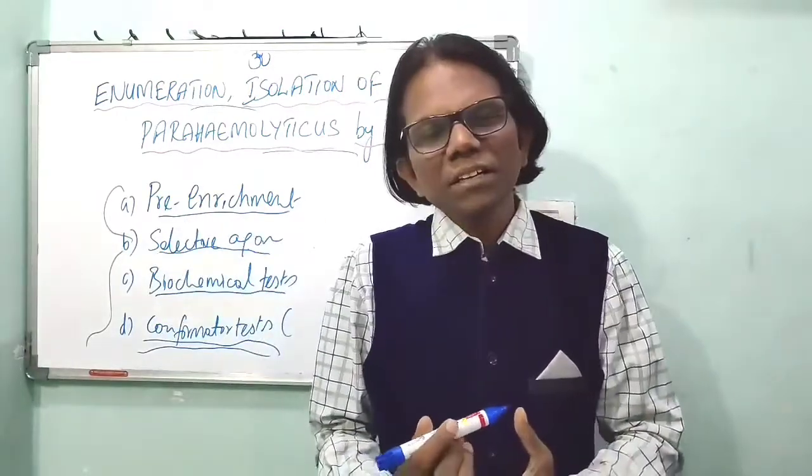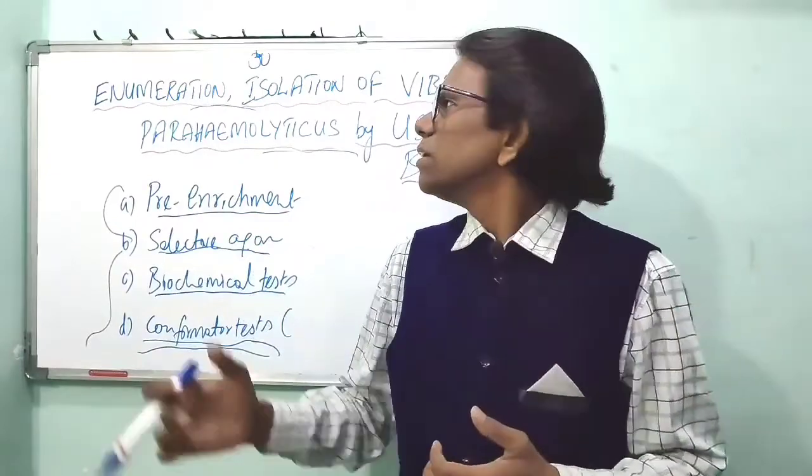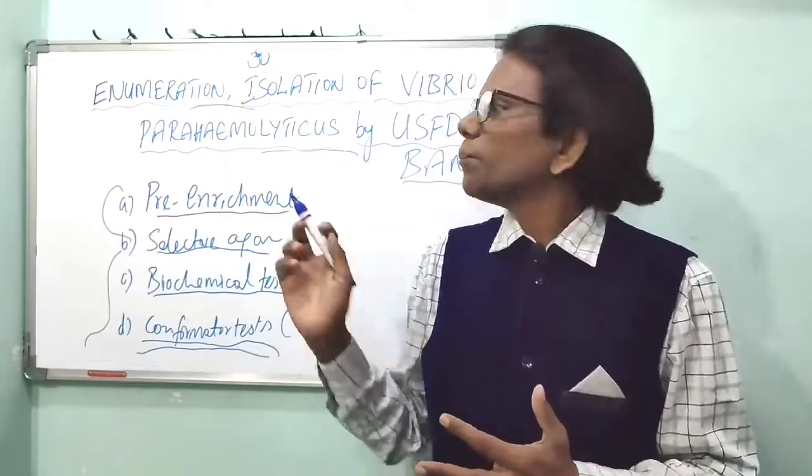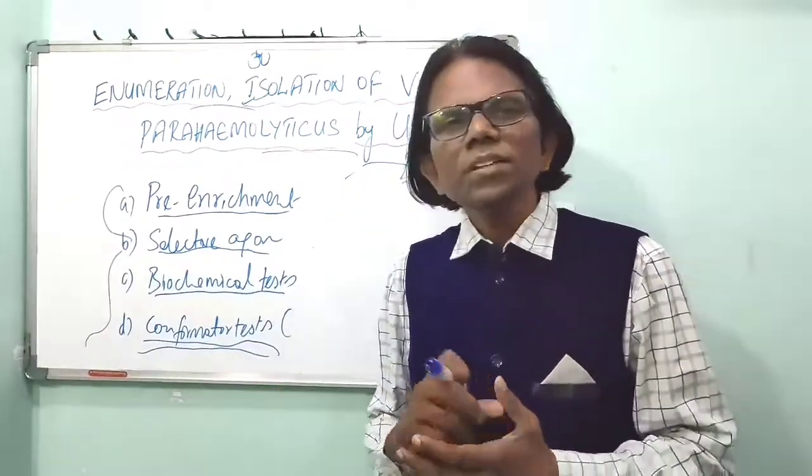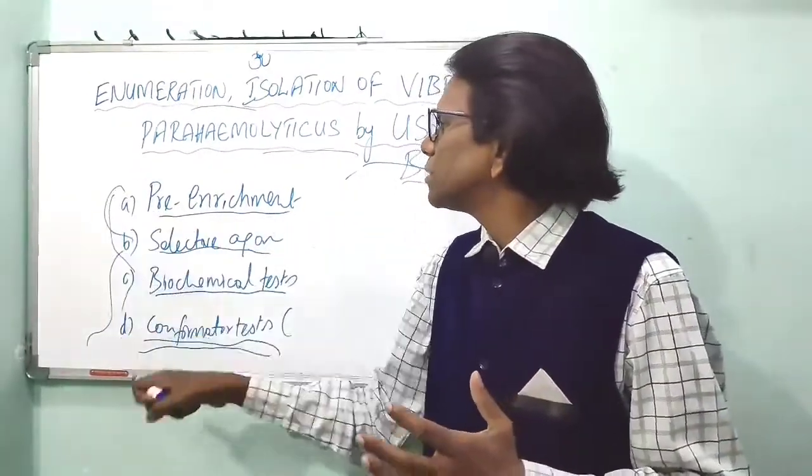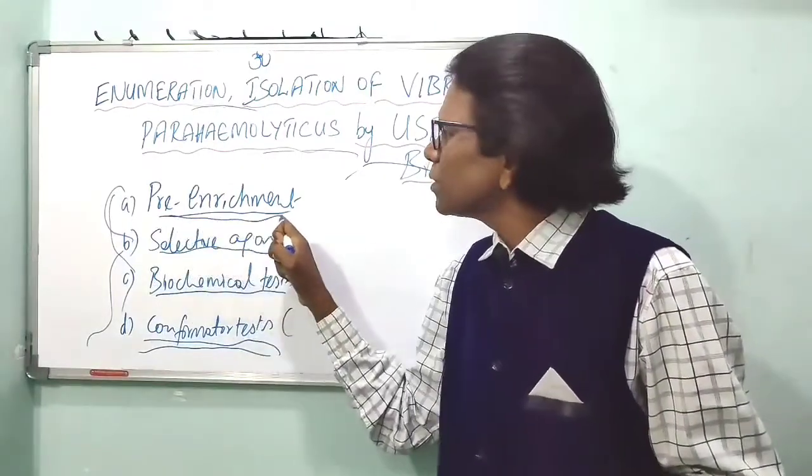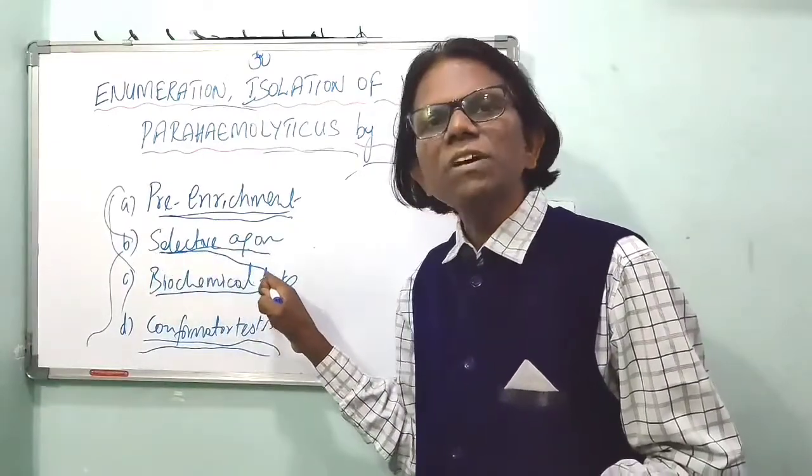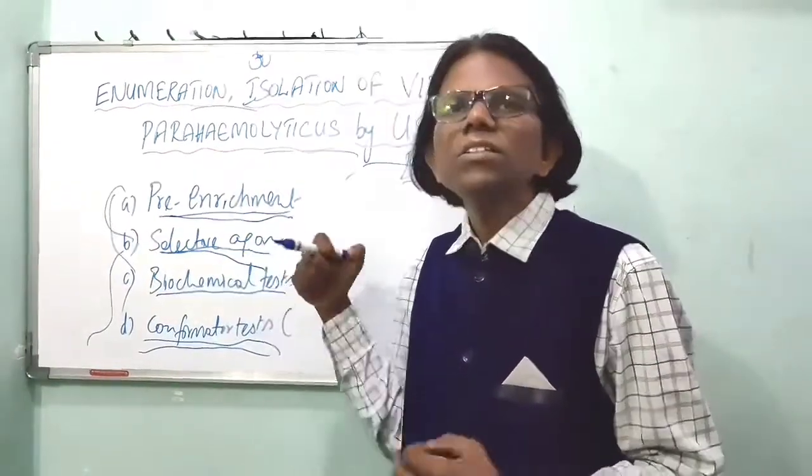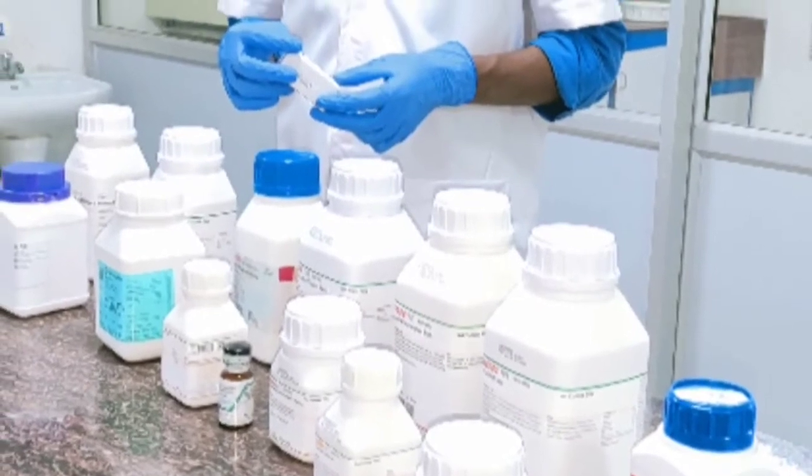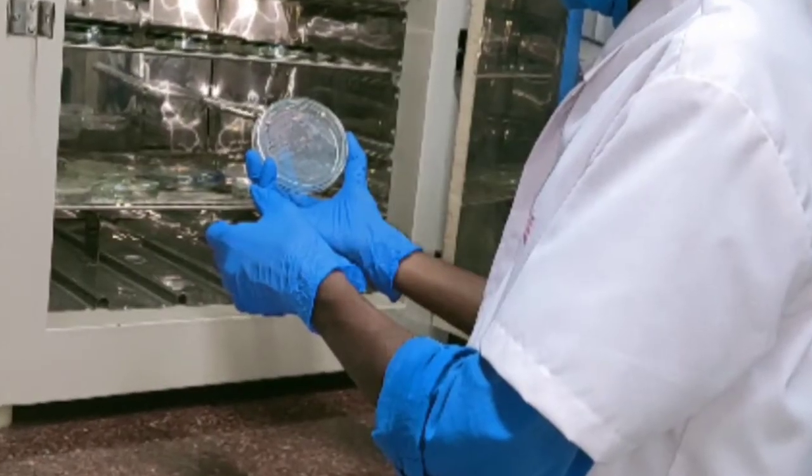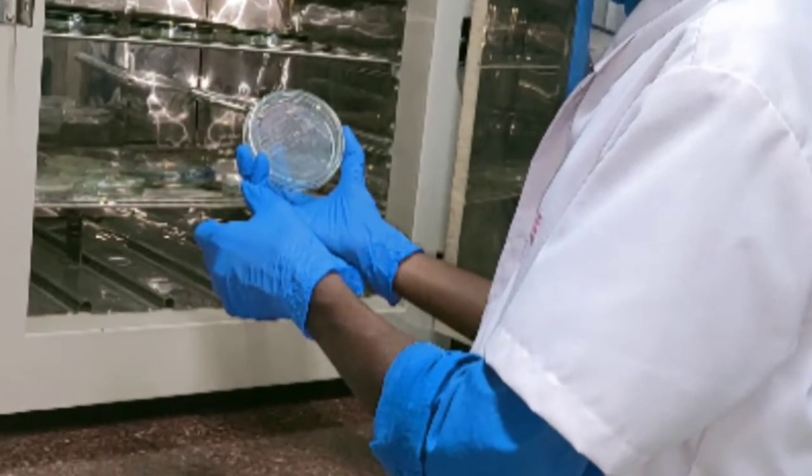Welcome back to my channel. Today our topic is enumeration, isolation, and identification of Vibrio parahaemolyticus by using BAM method. This video we are discussing in four components. The first one is pre-enrichment and primary enrichment process. The second component is selective agar. The third component is biochemical test, and the last one is confirmatory test.